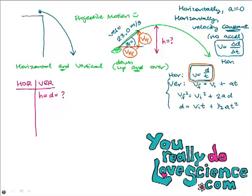You're not allowed to mix the horizontal and vertical information in the same equation. That's why we made this table — to clearly separate our horizontal and vertical information. We need to find the components of this initial velocity so we have a horizontal velocity and a vertical initial velocity.